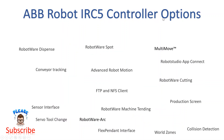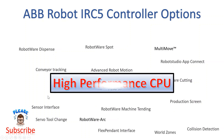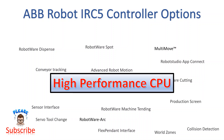The ABB robot IRC5 controller has various kinds of options. This is not everything — there are still more options, especially software options: RoboWare Dispense, SPOP, Multimove, Convert Tracking, Advanced Robot Motion, RoboWare Cutting, Sensor Interface, Server Tool Change, etc. The reason there are so many options is because the IRC5 controller CPU is really fast and high performance. That's why you can carry all these software options with the same CPU. The IRC5 controller CPU is all the same — they just add an option key, and then you can use these kinds of functions.